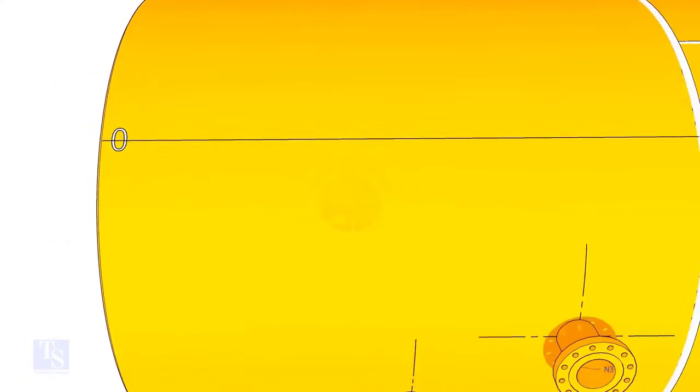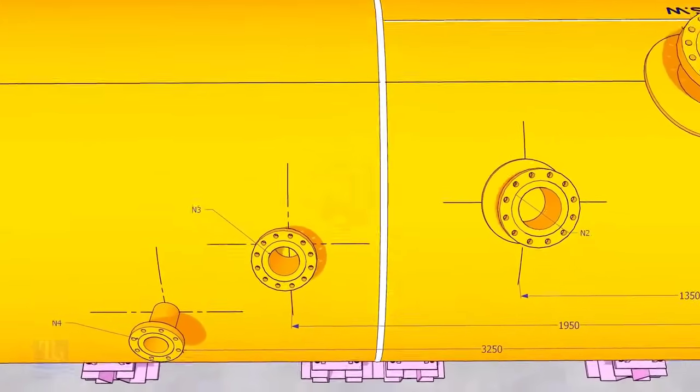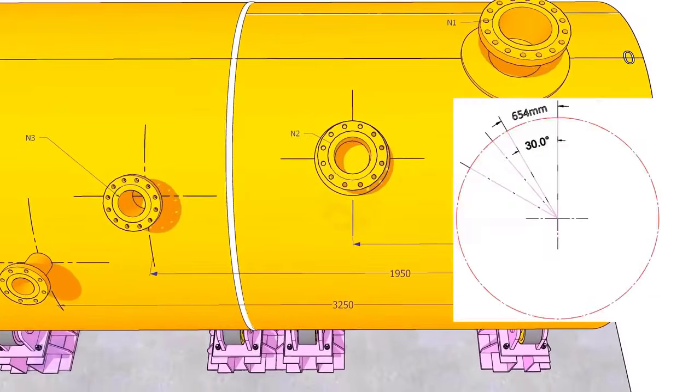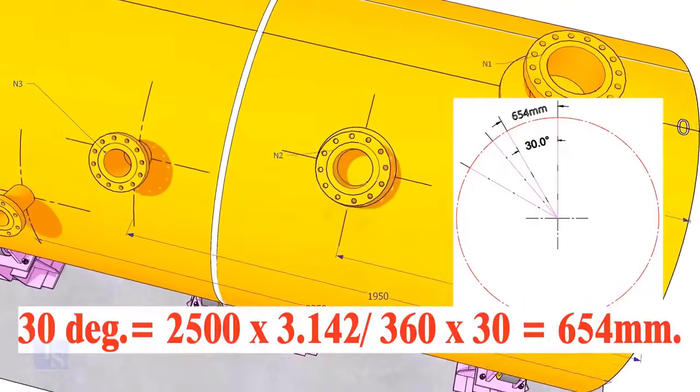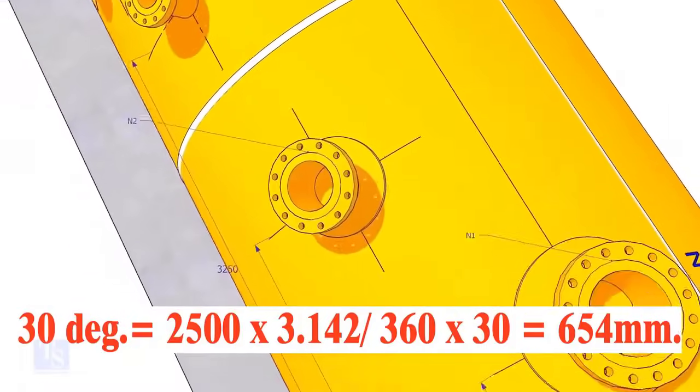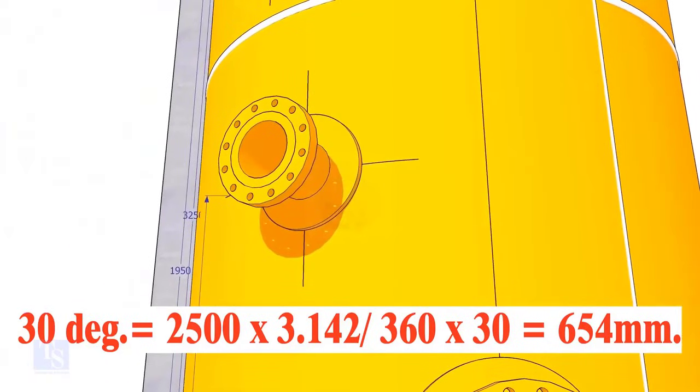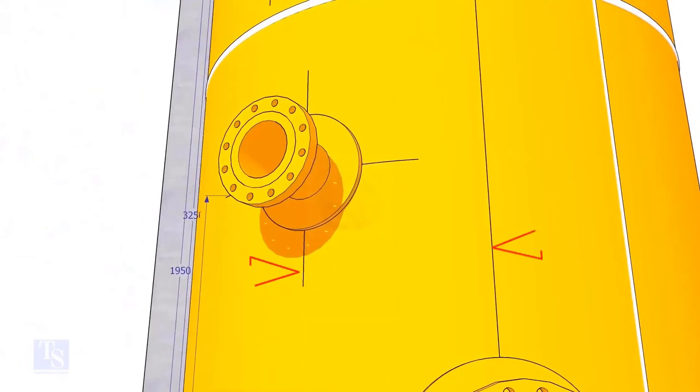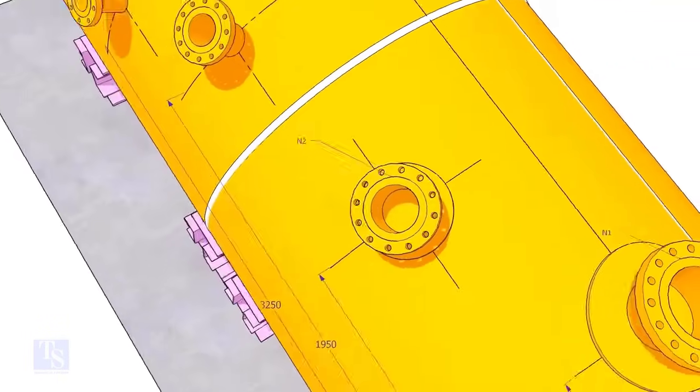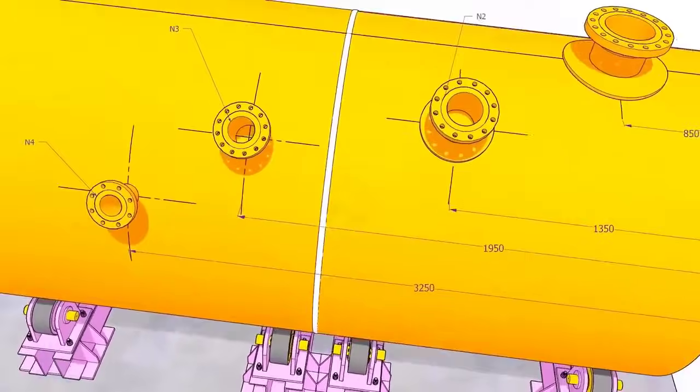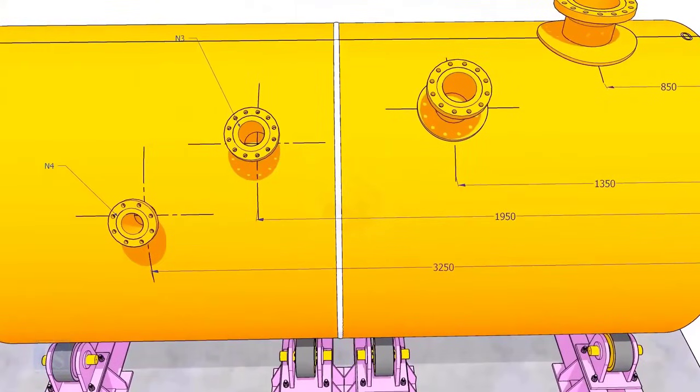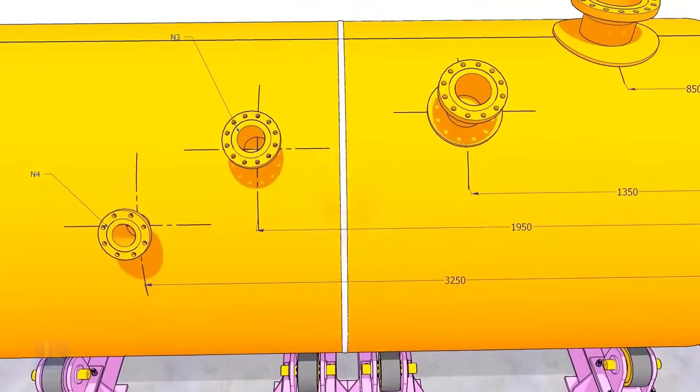Next, let us mark the center of nozzle N2. This nozzle comes at 30 degrees anticlockwise. Convert 30 degrees to arc length and mark this dimension at two locations as shown. Then draw an arc of 1350 millimeters from the edge of the shell intersecting this line. This point is the center of nozzle N2.